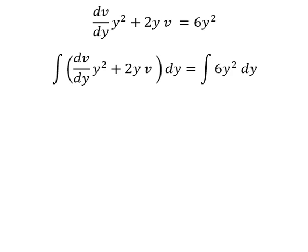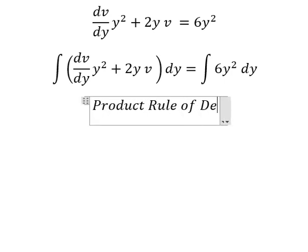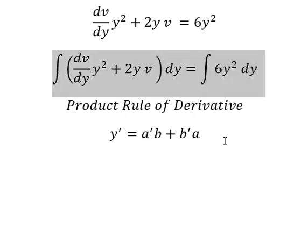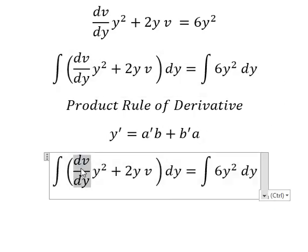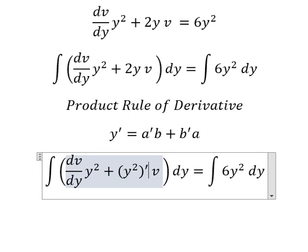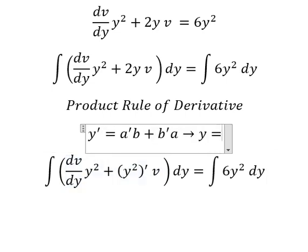Next, we can use the product rule of differentiation. So we have the derivative of y equals the derivative of a multiplied by b plus the derivative of b multiplied by a. So this one we have the derivative of a multiplied by b, this one is the derivative of b multiplied by a. So the integral of this one we have y equals ab.